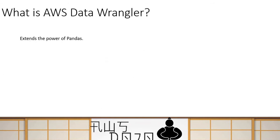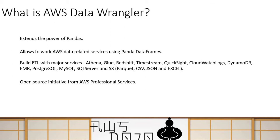First, an introduction about AWS Data Wrangler for those who don't know. It is an open source initiative from AWS Professional Services. Basically, when you are working with AWS services — especially data services like Athena, Glue, Redshift, RDS, and DynamoDB — many people who are used to using the pandas library want to read data from these services, load it into pandas, do transformations, and then write data back to AWS services. That's where Data Wrangler comes into the picture.